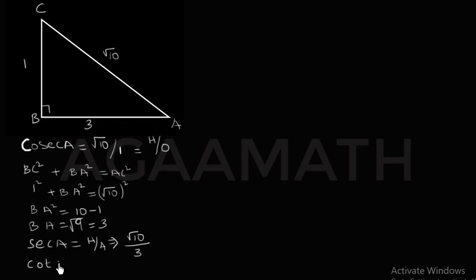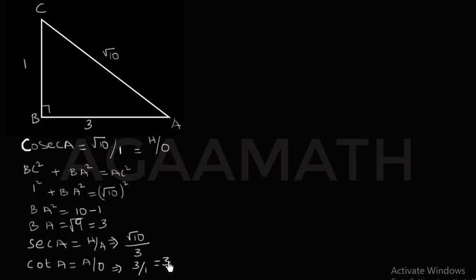Next we find cot A. Cot A is the reciprocal of tan A. Tan A equals opposite over adjacent, so cot A equals adjacent over opposite. The adjacent is 3 and the opposite is 1, so cot A equals 3 over 1, which is 3. Therefore secant A equals root 10 over 3 and cot A equals 3.